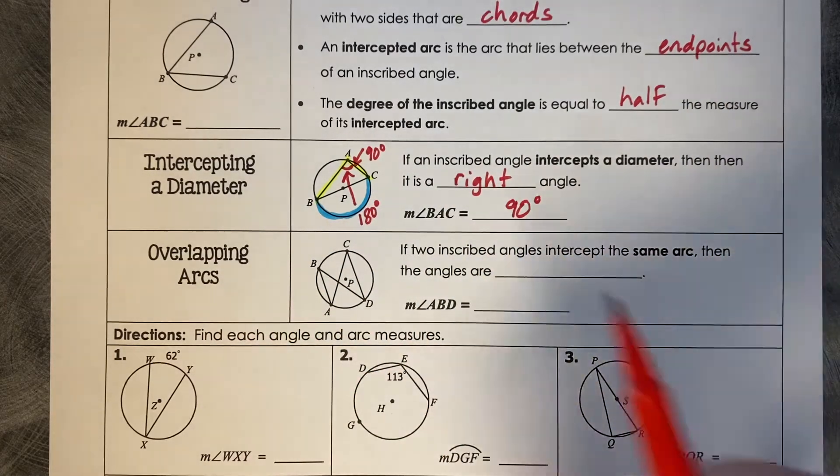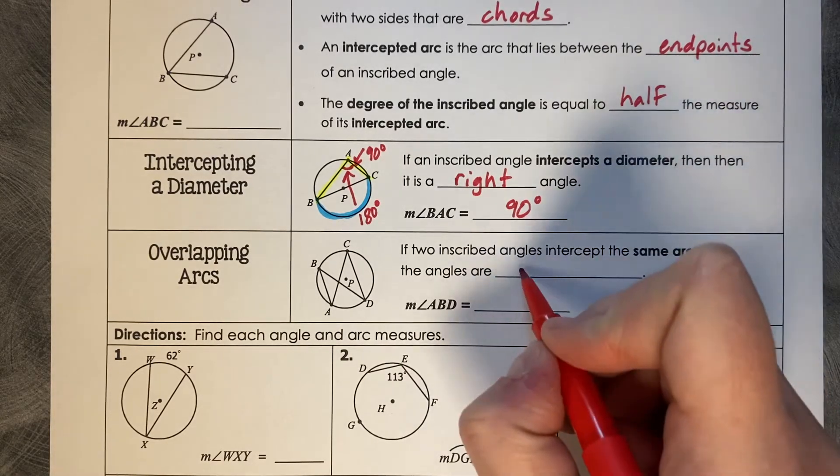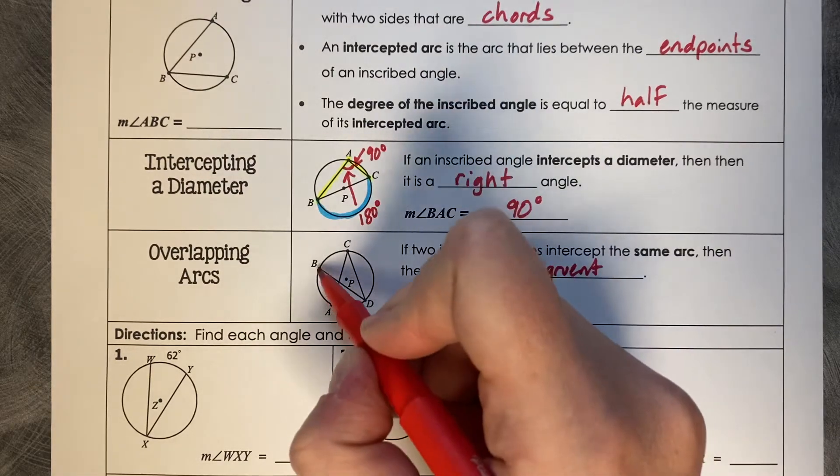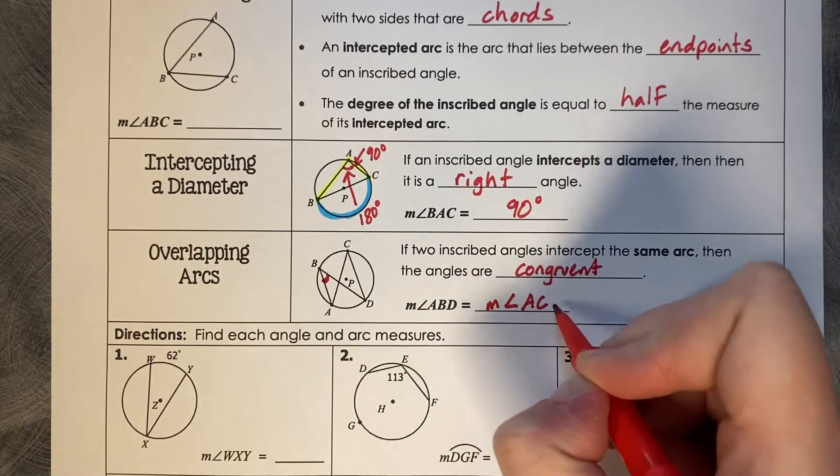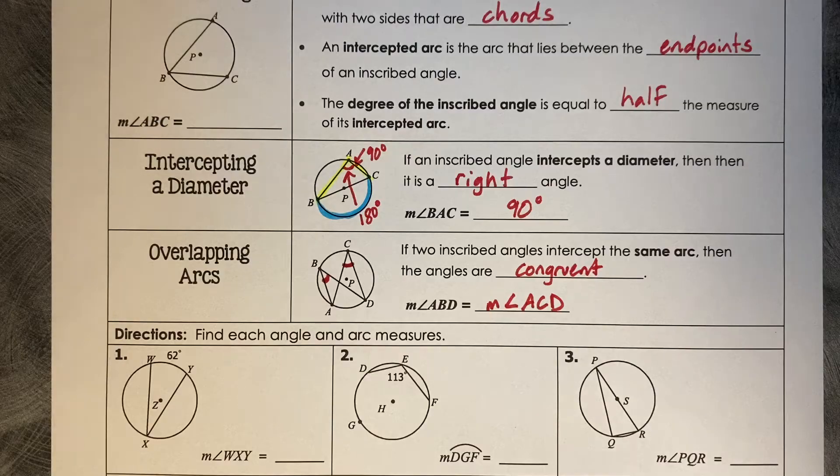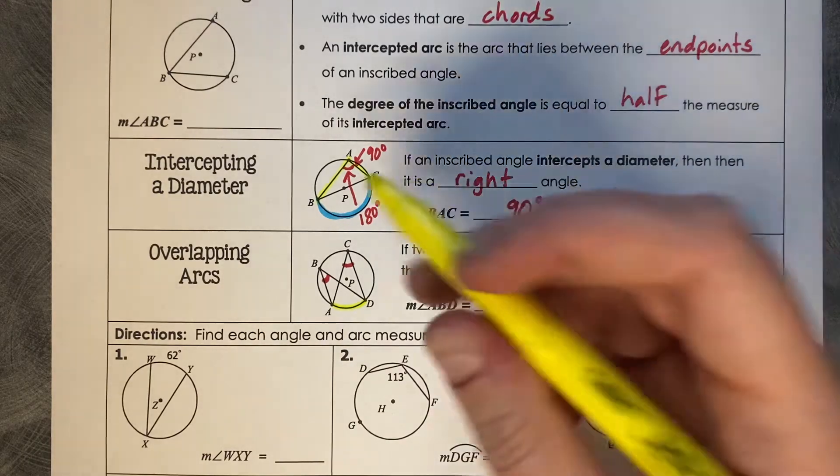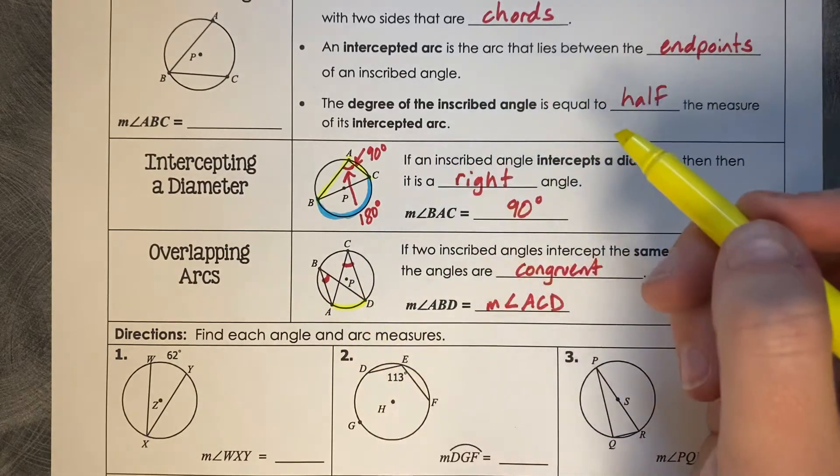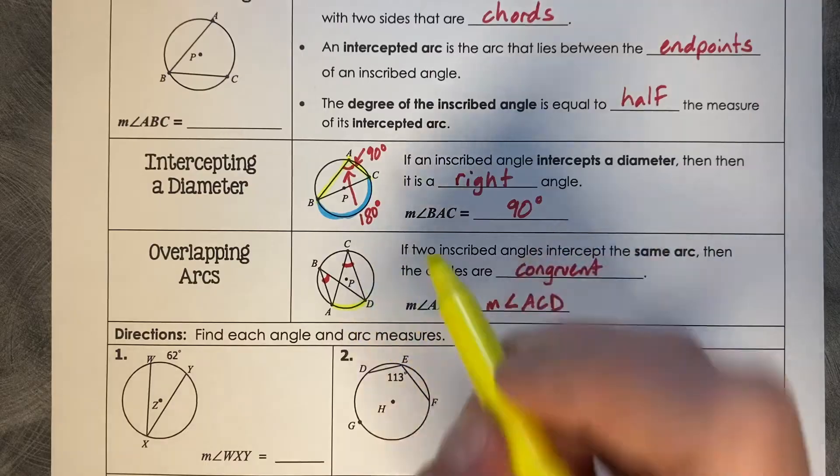Overlapping Arcs. If two inscribed angles intercept the same arc, then the angles are congruent. So the measure of angle ABD, this angle measure here, is equal to the measure of angle ACD. The reason that's true is because they share this arc between them, AC. Their endpoints are in the same place, their angles match their endpoints at the same arc. That's why it's called an overlapping arc.